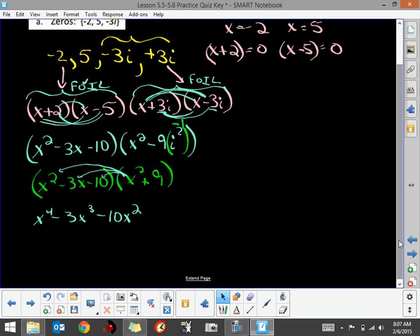Then we'll distribute the 9. When we distribute the 9, it will be 9 times x², or 9x². I'm going to put that underneath our 10x². Then I'm going to take the 9 times -3x, which would be -27x. Then I take the 9 times -10, which is -90.